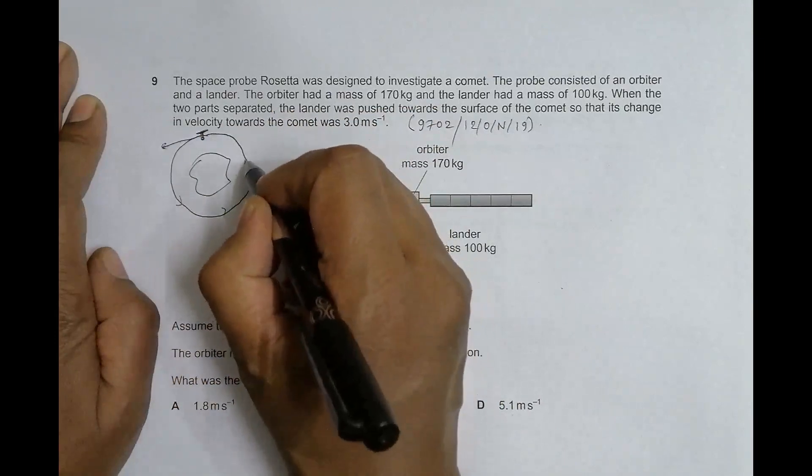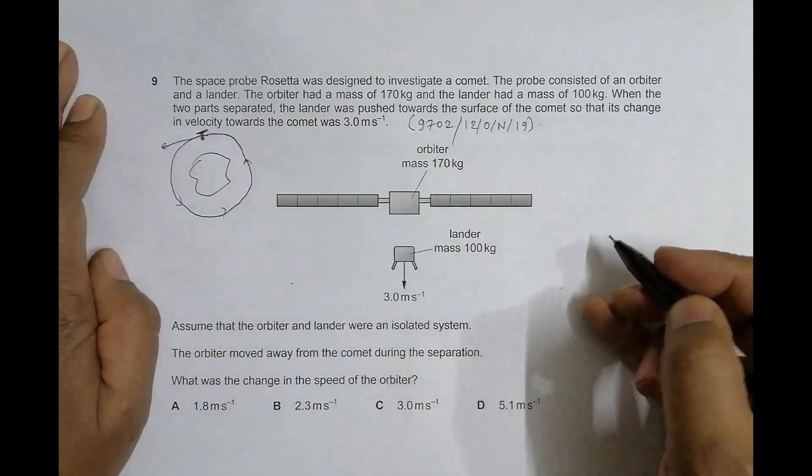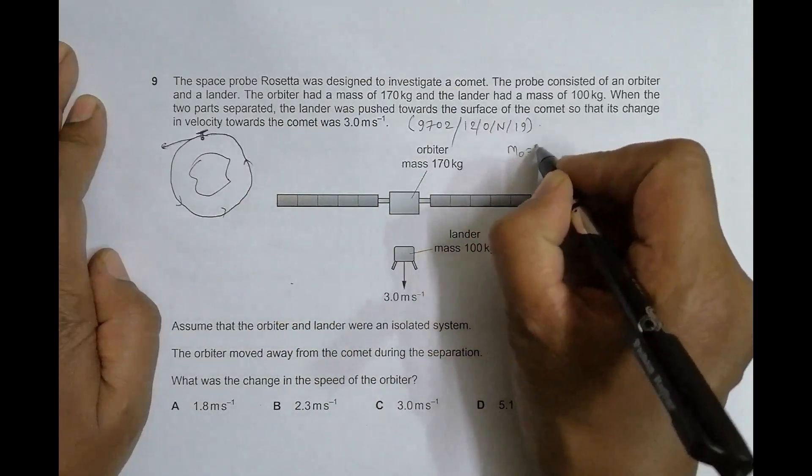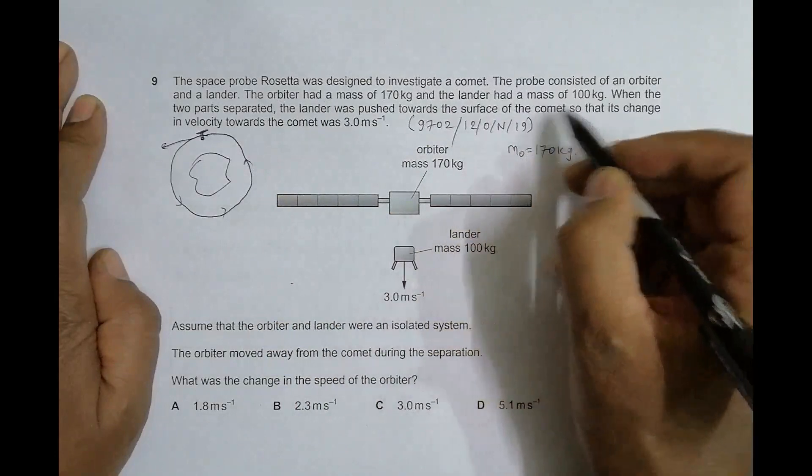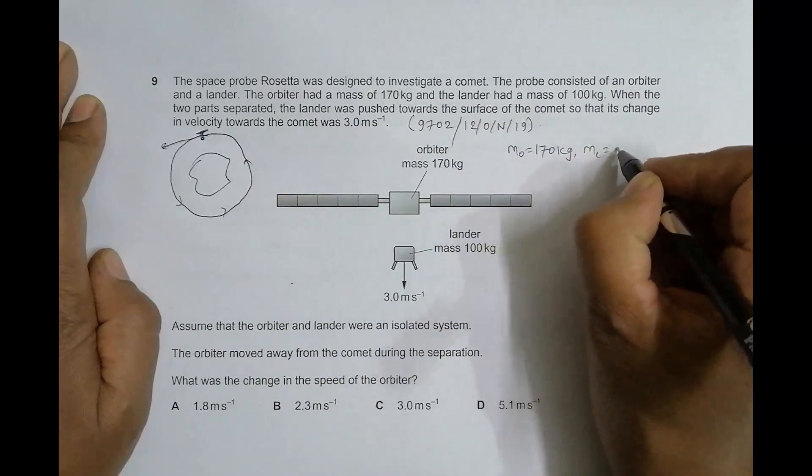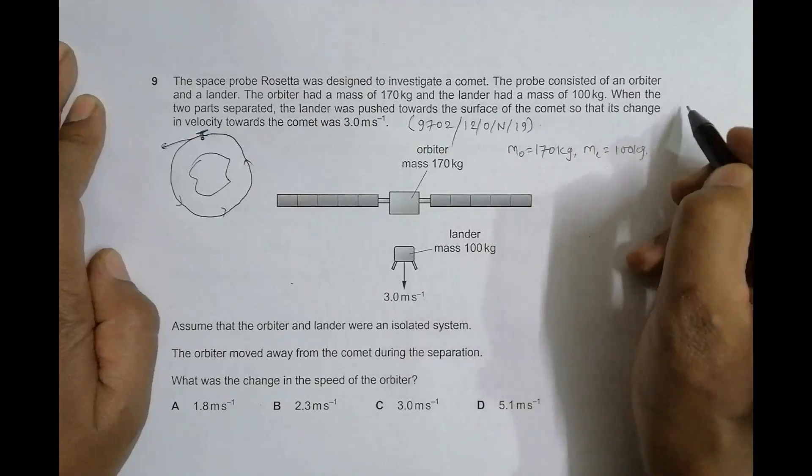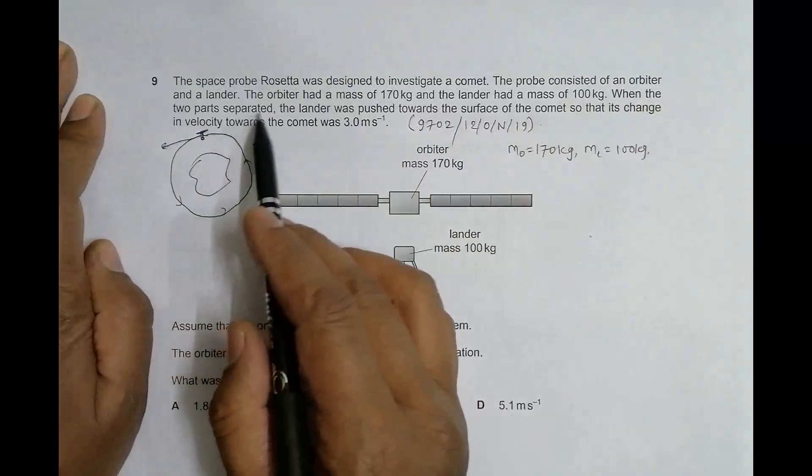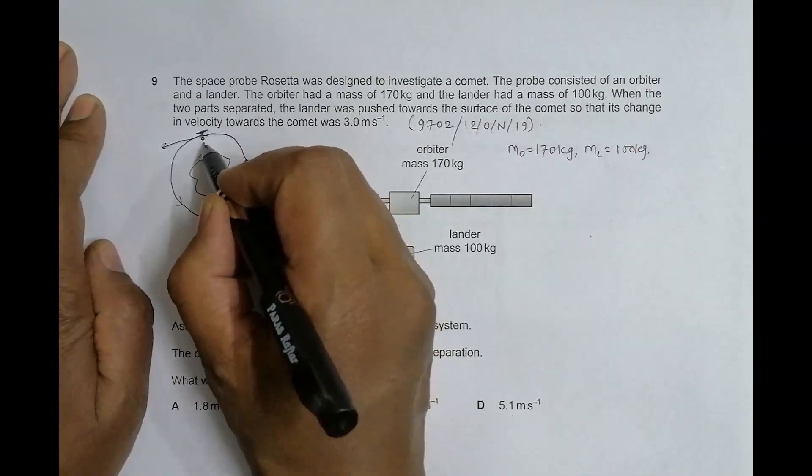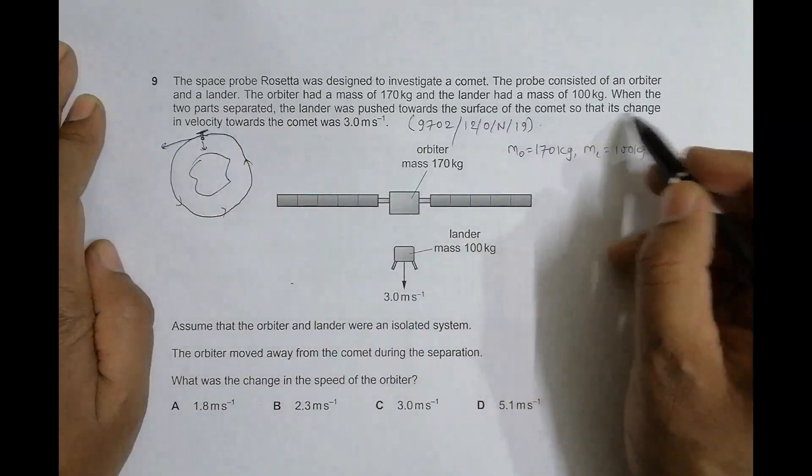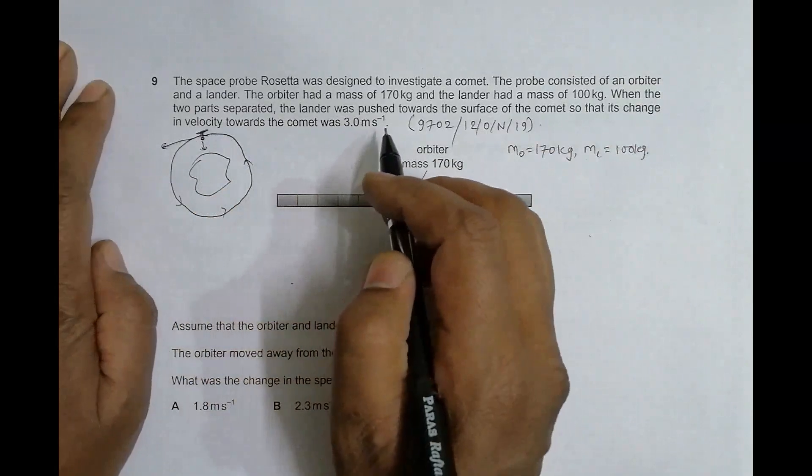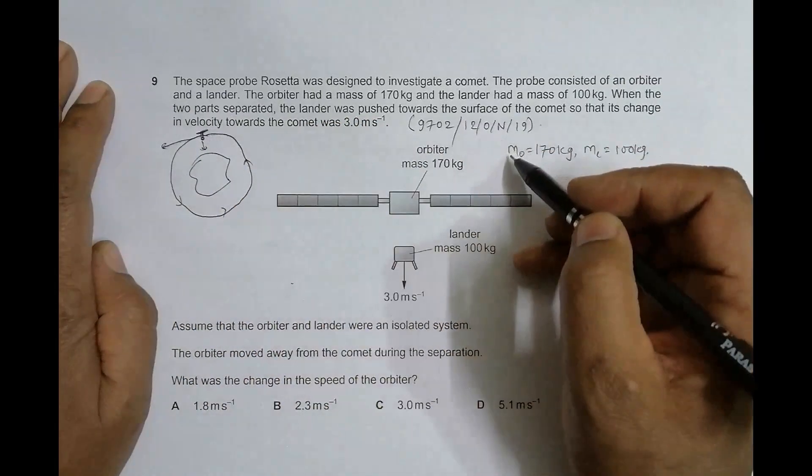The orbiter had a mass of 170 kg, so mass of orbiter equals 170 kg. The lander had a mass of 100 kg, so M lander equals 100 kg. When the two parts separated, the lander was pushed towards the surface of the comet so that its change in velocity towards the comet was 3 meter per second.